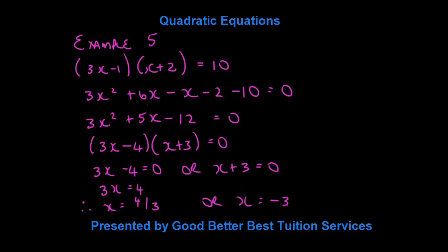What we do now is add our like terms. We're going to say 6x minus x is 5x, and minus 2 minus 10 is minus 12. That gives us a trinomial, which we need to factorize again. And we're going to factorize that into 3x minus 4, x plus 3 is equal to 0.